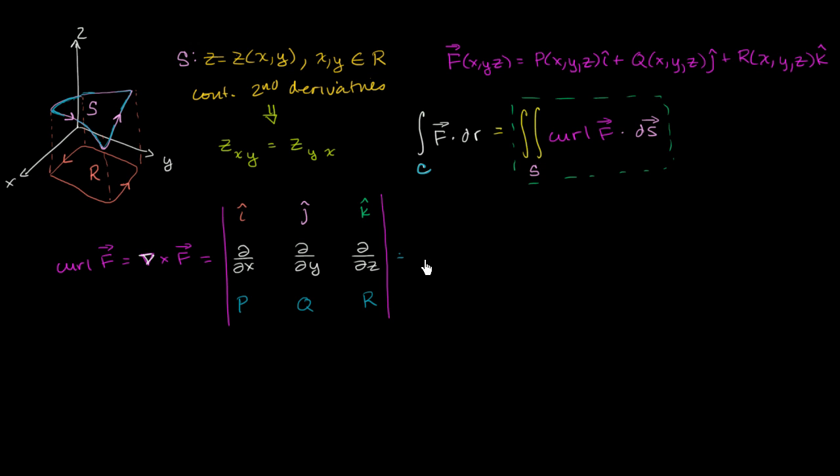so blank out that column, that row, it's going to be the partial of r with respect to y, partial of r with respect to y, minus the partial of q with respect to z, minus the partial of q with respect to z.